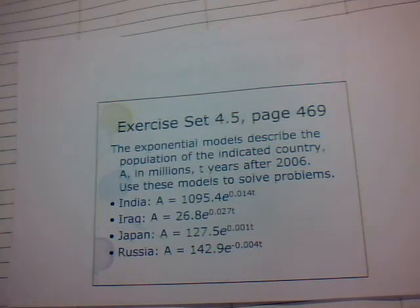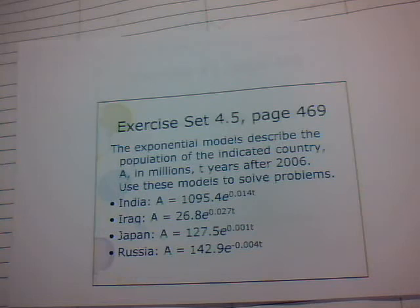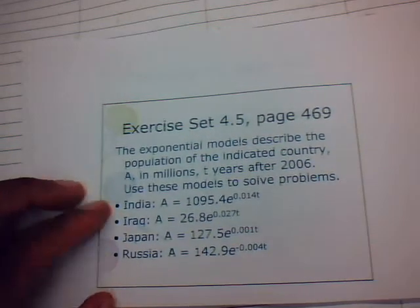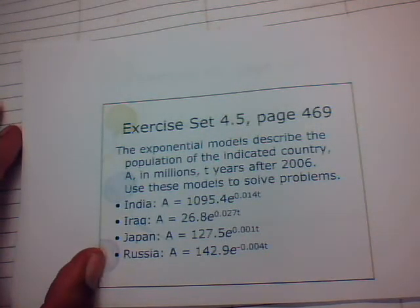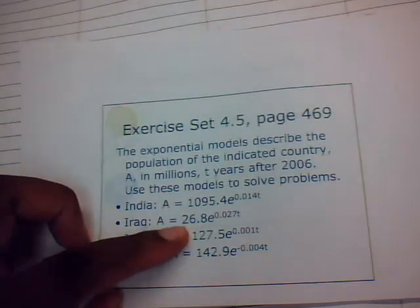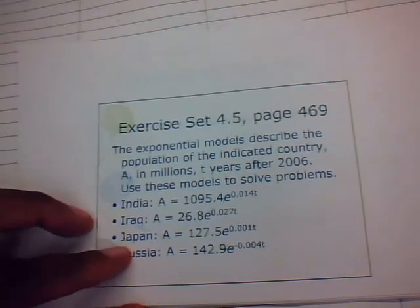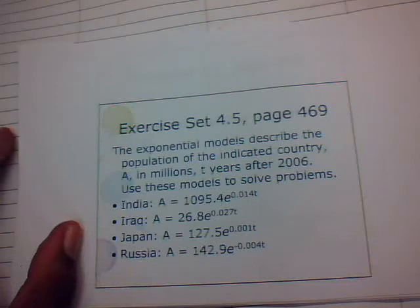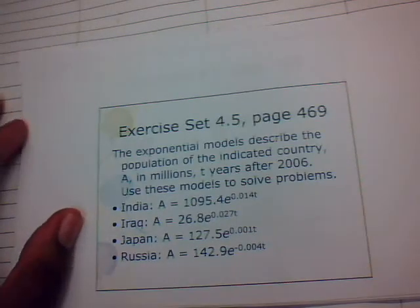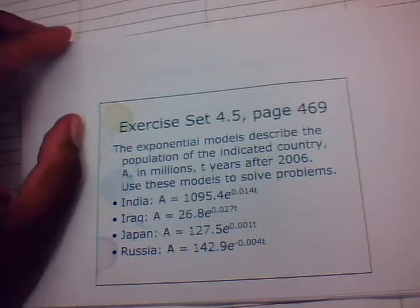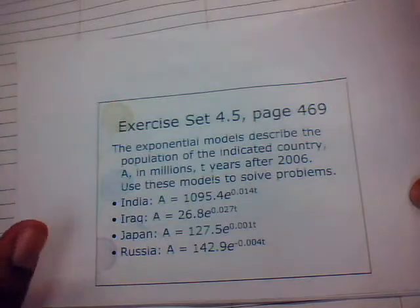Let's look at a few problems. The exponential models describe the population of the indicated country, a in millions, t years after 2006. We have four different exponential models: India — a equals 1095.4 times e to the 0.014t; Iraq — a equals 26.8 times e to the 0.027t; Japan — a equals 127.5 times e to the 0.001t; and Russia — a equals 142.9 times e to the negative 0.004t.